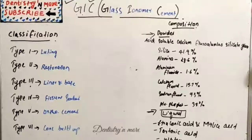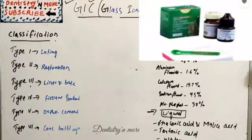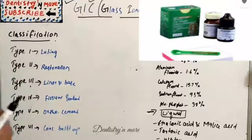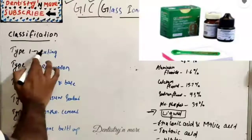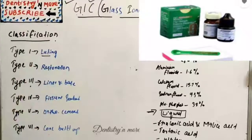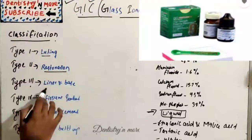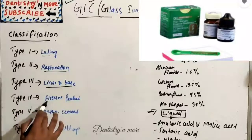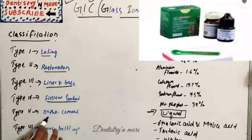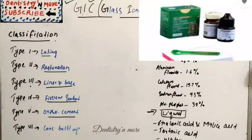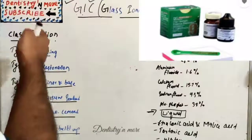The classification: it is an all-in-one cement with many uses in dentistry. Type 1 is luting cement, Type 2 is restorative cement, Type 3 is liner and base cement, Type 4 is fissure sealant, Type 5 is ortho bracket cementation, and Type 6 is core buildup.